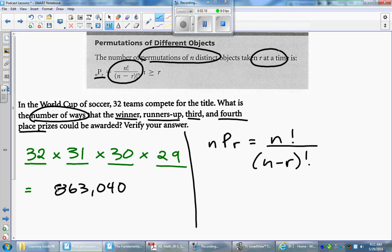All right, so N represents the total number of objects that we're arranging here. So we have a total number of 32 teams here, and R represents how many we're arranging. Okay, so we're actually arranging four different spots here. So we have 32 permute 4.